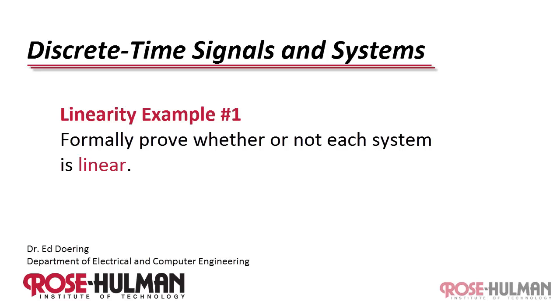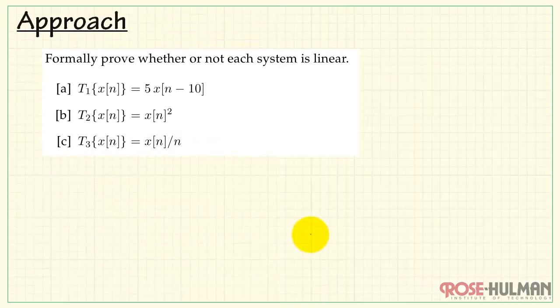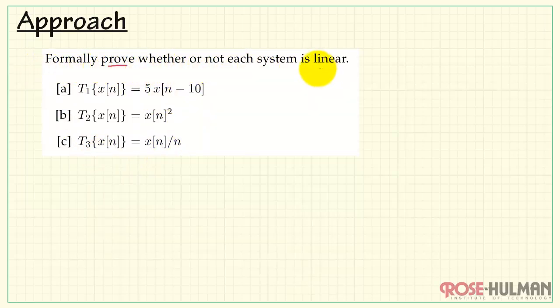This is linearity example number one. Formally prove whether or not each system is linear. Here we have three systems and we need to formally prove whether or not each system is linear.